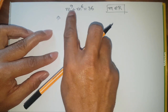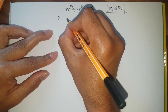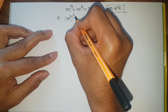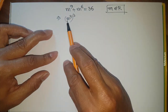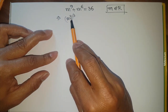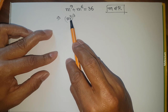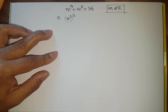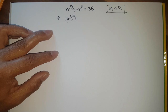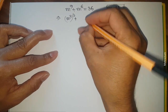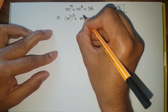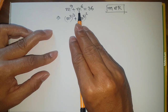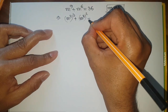I can rewrite m to the power 9 as (m³)³, because 3 multiplied by 3 is 9. Similarly, I can rewrite m to the power 6 as (m³)², which equals m to the power 6. So the equation becomes (m³)³ plus (m³)² equals 36.